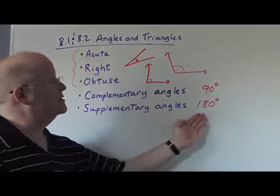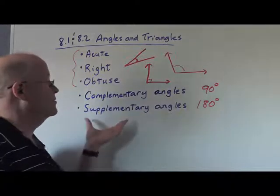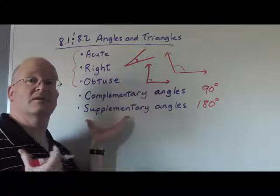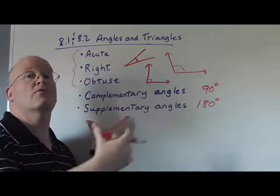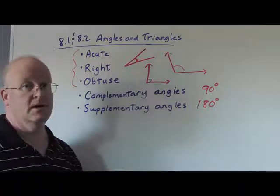Complementary angles add up to 90 degrees and supplementary angles add up to 180 degrees. Now often students get these two confused. And I just like to remember that the supplements are the larger ones. If you're in the army and the supplements have arrived you've got more things having arrived and therefore that is the larger of the two.